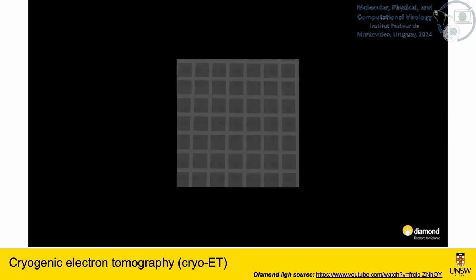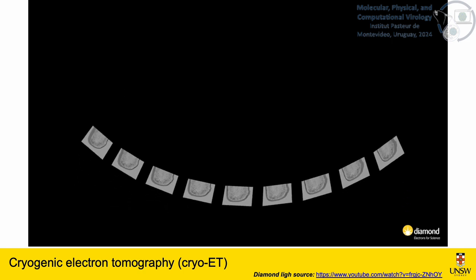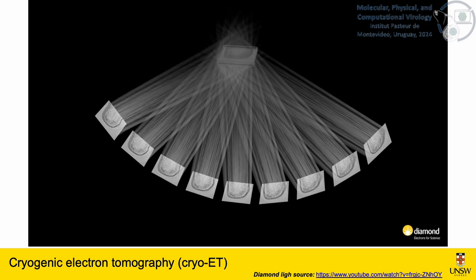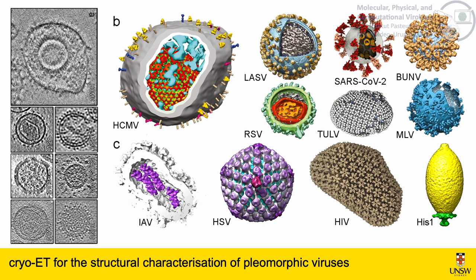There is a second technique that allows us to reconstruct the structure of pleomorphic viruses without this assumption: electron tomography, also named cryo-electron tomography when done at cryogenic temperatures. In cryo-electron tomography, instead of taking thousands of images of different areas of the grid, we take different images of the same region of interest at different angles — what we call a tilt series. We then back-project these images from the tilt series to obtain a three-dimensional map called a tomogram. This technique has been successfully used to determine the structure of a number of different enveloped and pleomorphic viruses, like human cytomegalovirus, Lassa virus, SARS-CoV-2, Bunyamwera virus, Rous sarcoma virus, Tula virus, murine leukemia virus, influenza, HIV, or the archaeal virus IS-1.